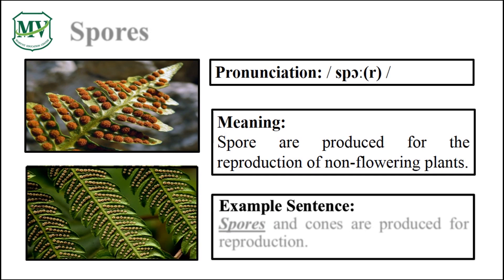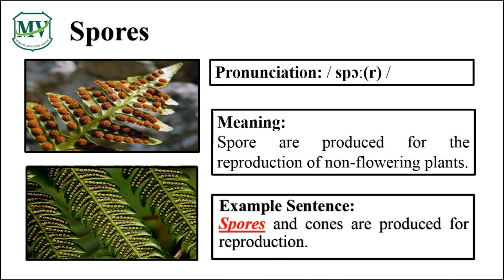Please say the word with me. Spores. Let's say it again. Spores. S-P-O-R-E-S. That was fantastic! Can you say the word by yourself? Wonderful! Spores! Excellent! Spores and cones are produced for reproduction. Can you read the sentence on your own? Wonderful!